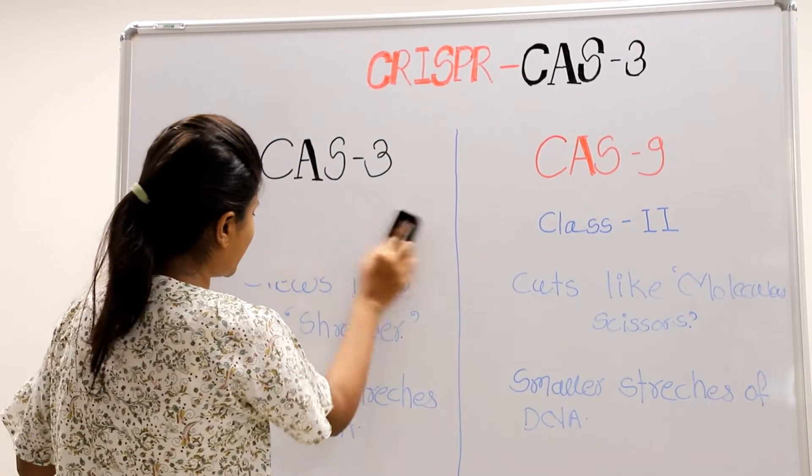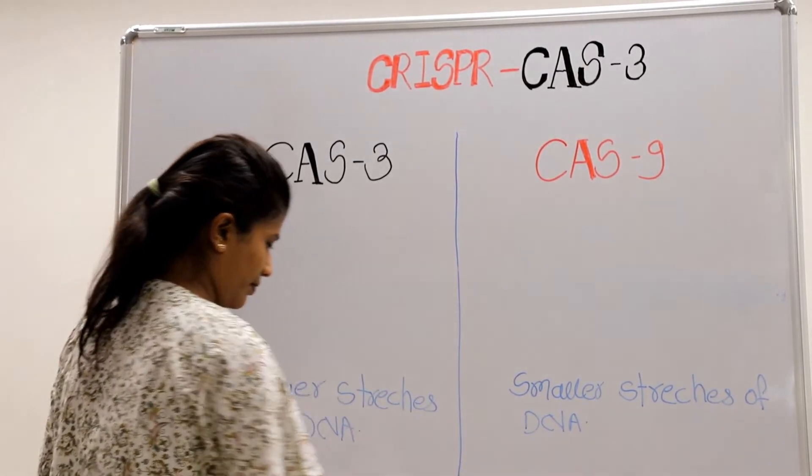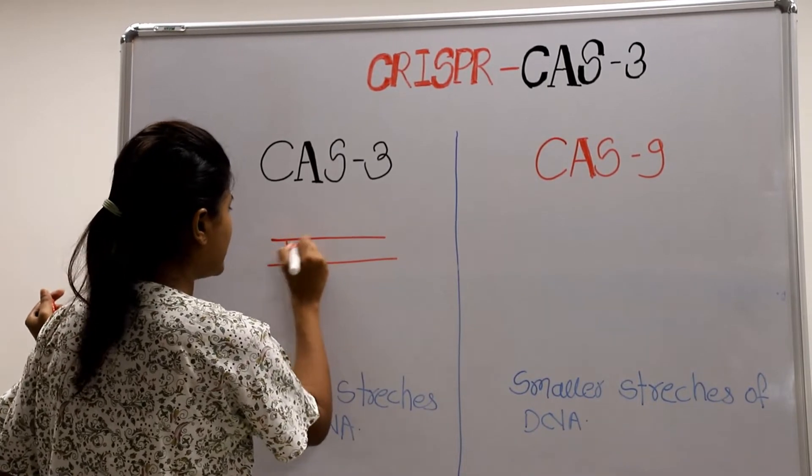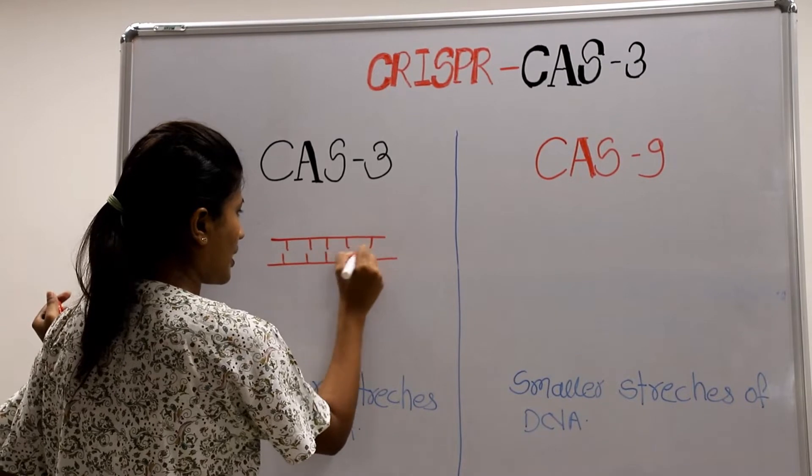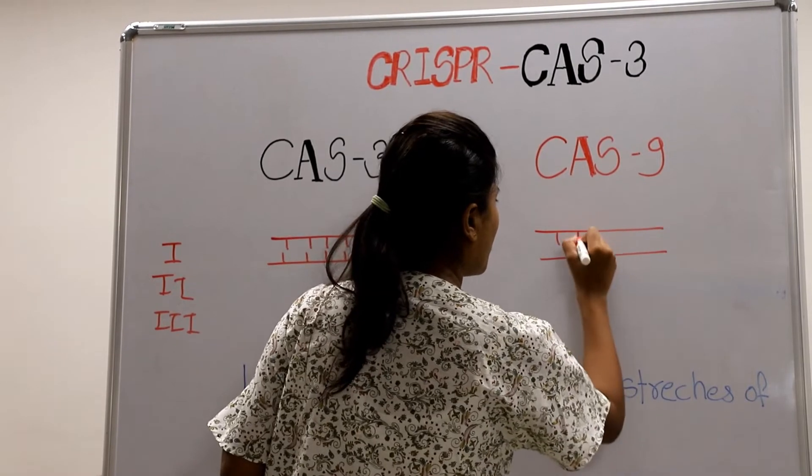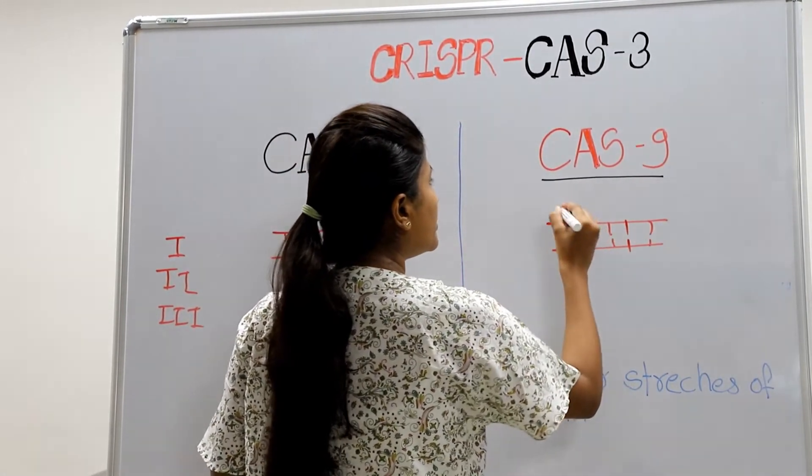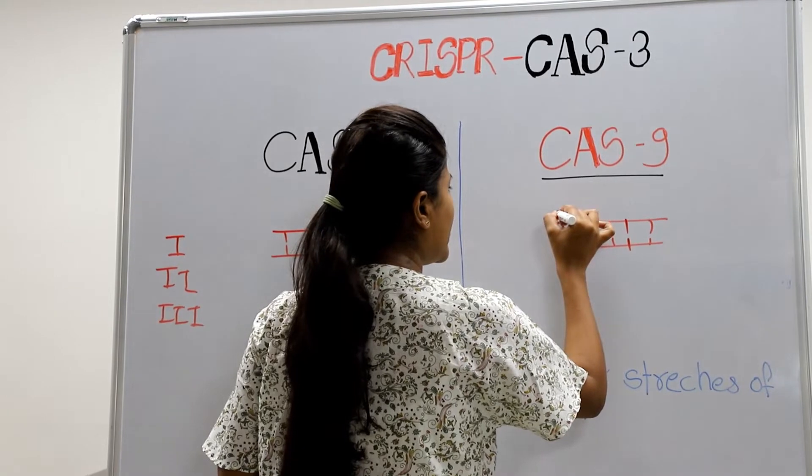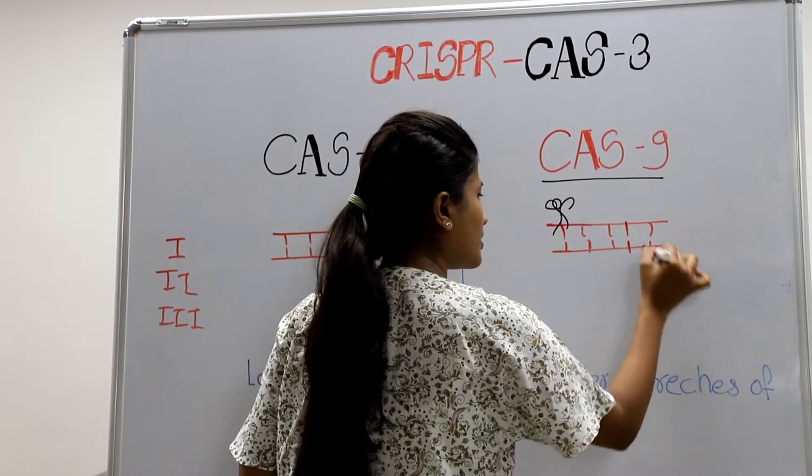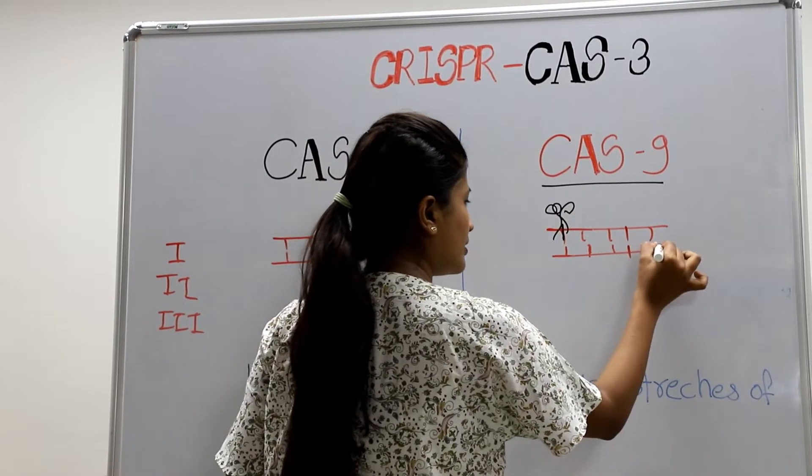Let's see the diagrammatic representation. Suppose this is our DNA. In case of Cas9, the Cas9 enzyme cuts DNA like scissors. It cuts DNA at this side and this side.